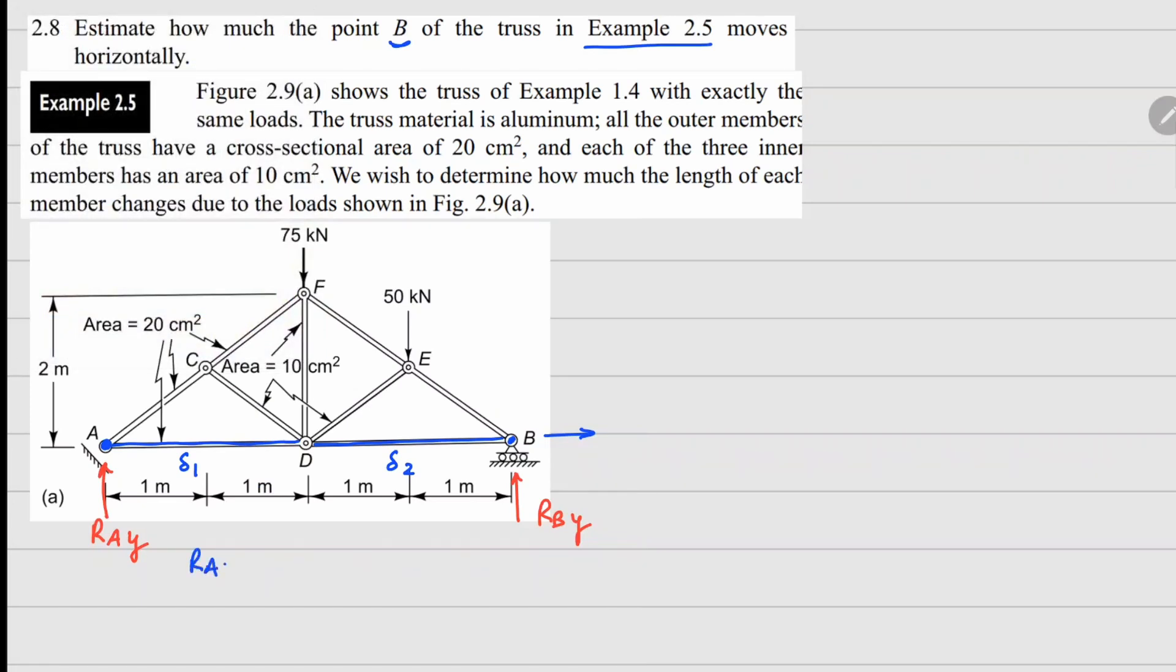If I do the force balance, I get RAY plus RBY equals 75 plus 50 going downwards, equals 125 kN. For the moment balance I can do it about point B. I have a force that is 75 times distance 2 meters, clockwise moment, plus 50, which is this force, and the distance is 3 meters. This moment will be balanced by the moment from RBY, so that is RBY times 4 meters. If I solve these, RBY comes out to be 75 kN and RAY is 50 kN.